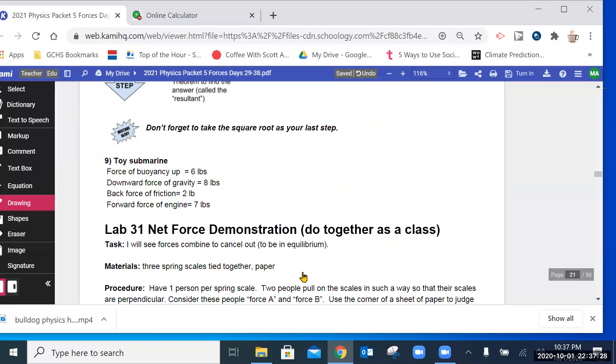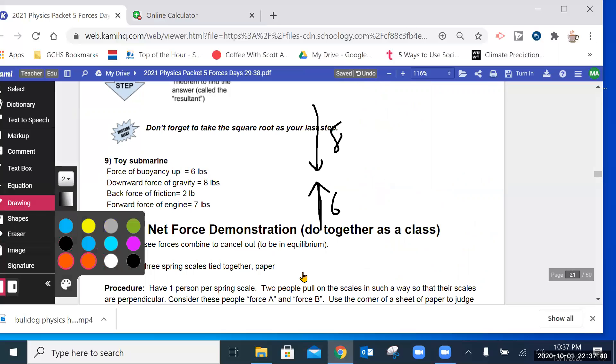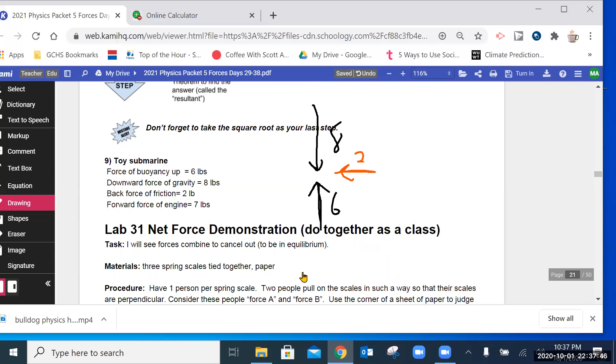Okay. The four forces. We have an upward force of six. And a downward force of eight. So, that's a little bit longer. And then we have a backwards force of two. So, that's a shorter arrow. And a forward force of seven. Longer arrow. Those aren't quite in proportion, but it's kind of close.